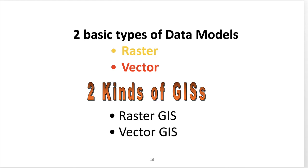There are two basic types of data models: the raster model and the vector model. Historically, there have also been two kinds of GIS: raster GIS and vector GIS. This is much like Adobe Photoshop and Adobe Illustrator — Illustrator is for vectors and Photoshop is for rasters. You can draw a line in Photoshop, but it's better designed for rasters. Similarly, in GIS we saw a convergence between these two types, so modern GIS platforms are typically just as good in rasters as in vectors.